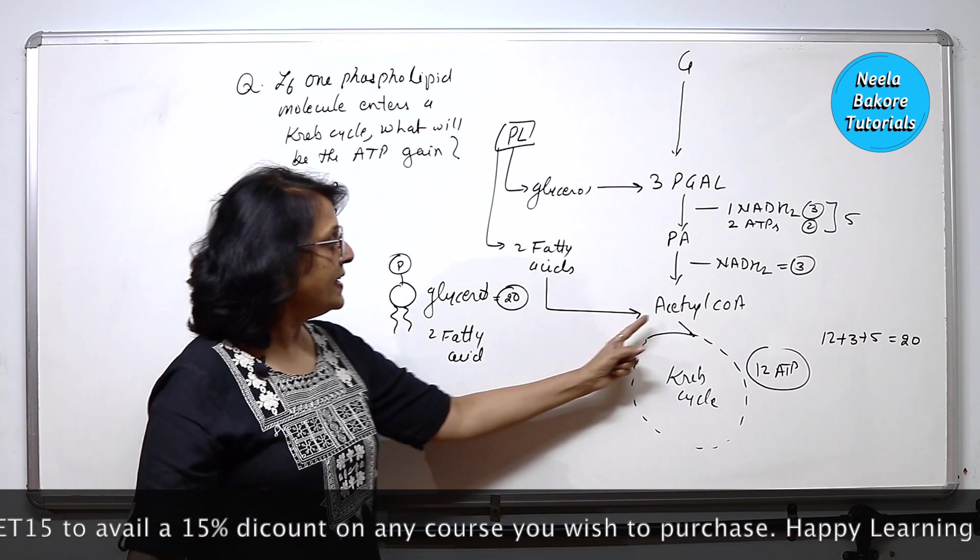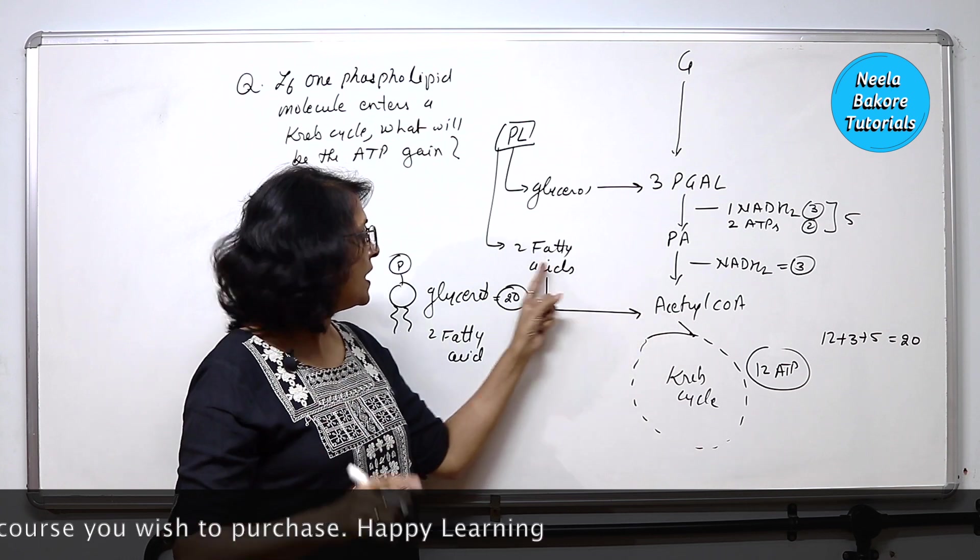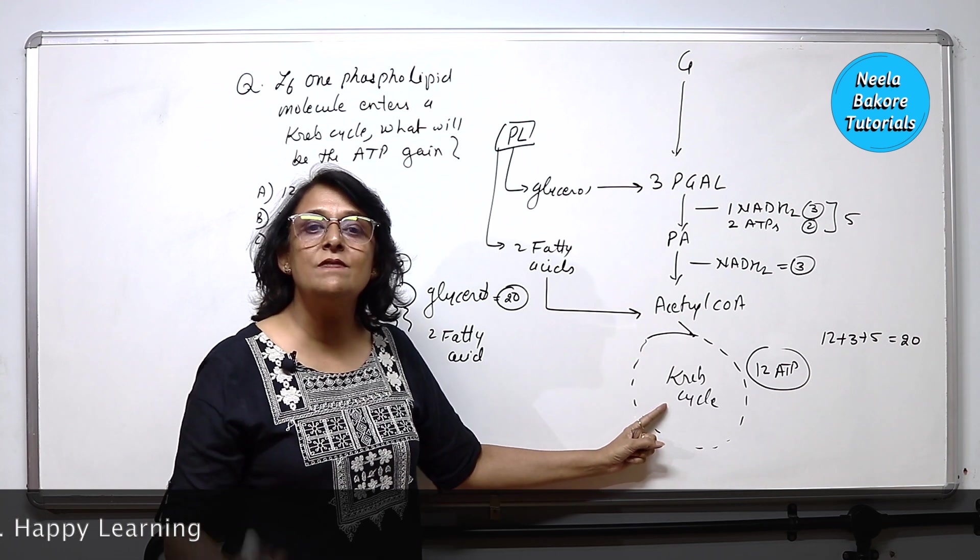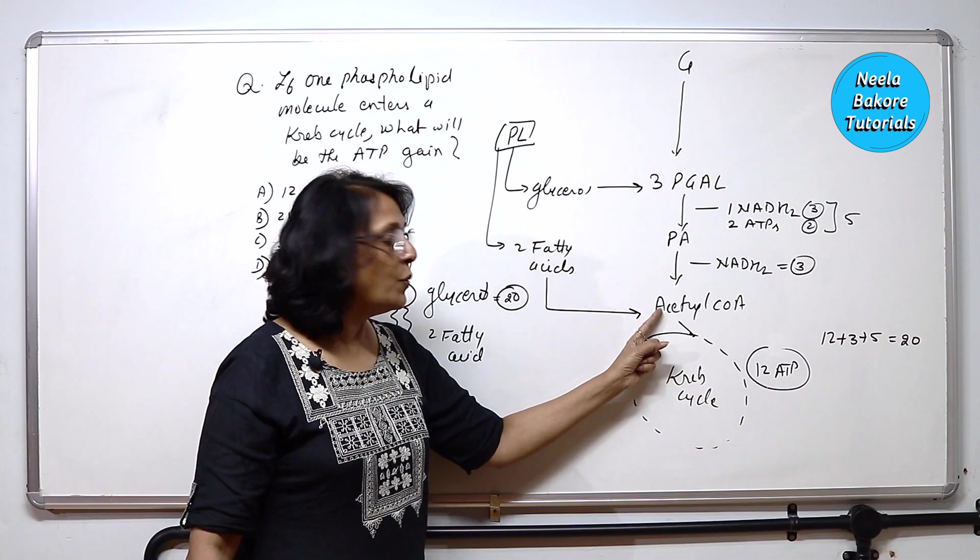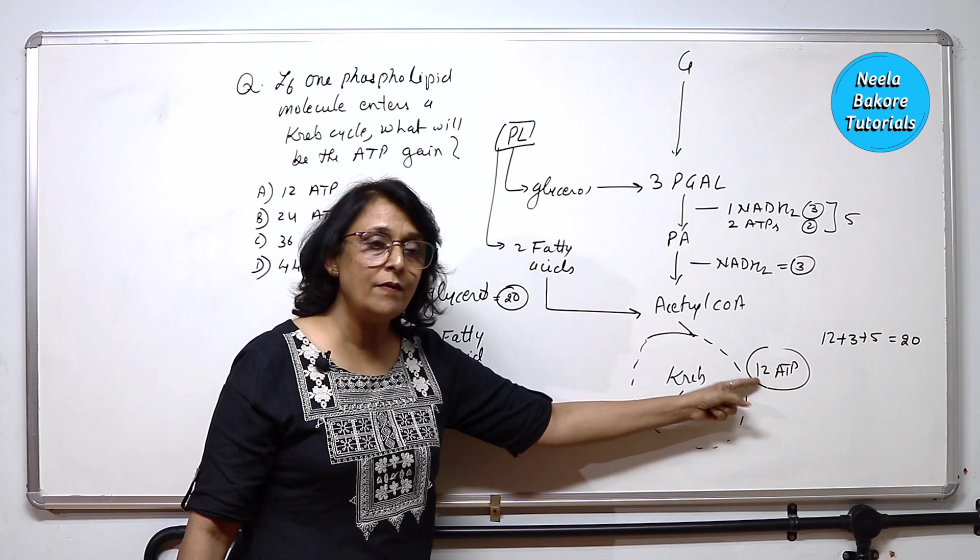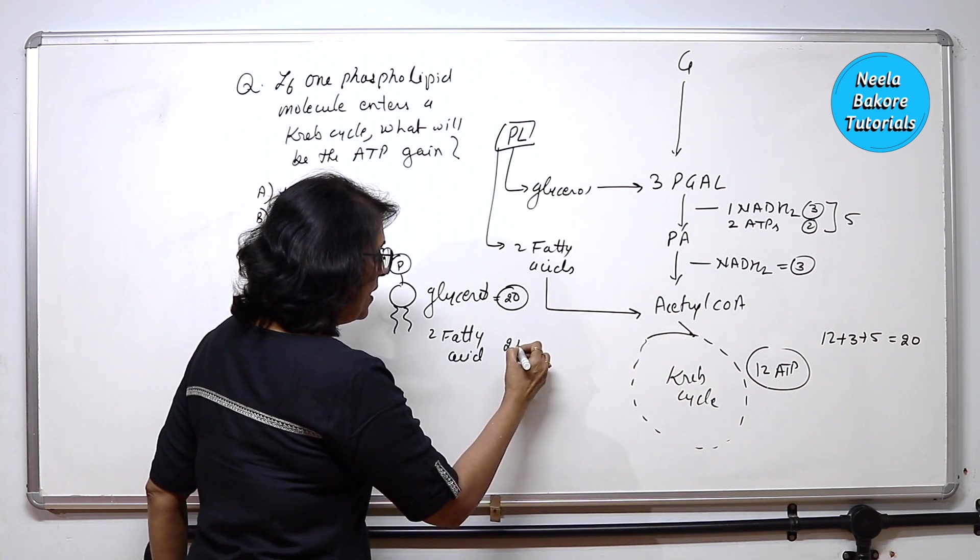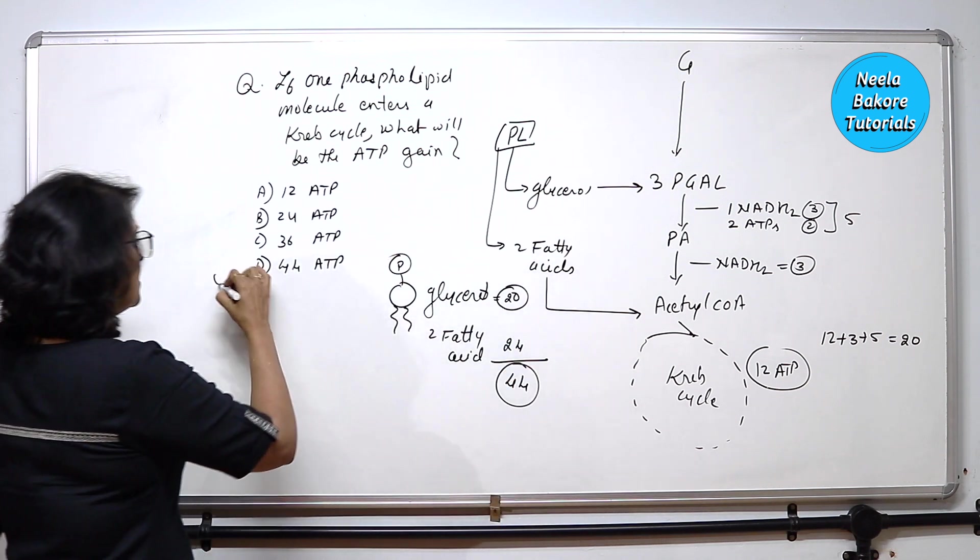Now, this fatty acid starts here, it joins here, so it forms one acetyl coenzyme, second fatty acid, second acetyl coenzyme. One Krebs cycle gives us 12 ATP. So with one acetyl coenzyme 12, with the second acetyl coenzyme 12. So it is 24, total 44 ATPs. This is your correct answer, this is purely concept based question.